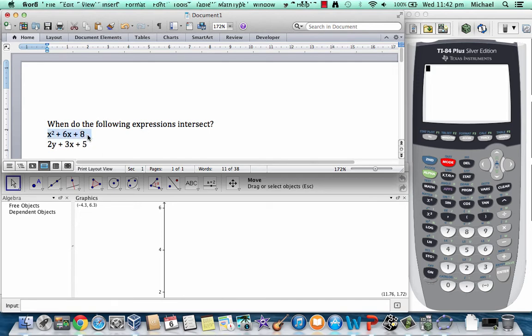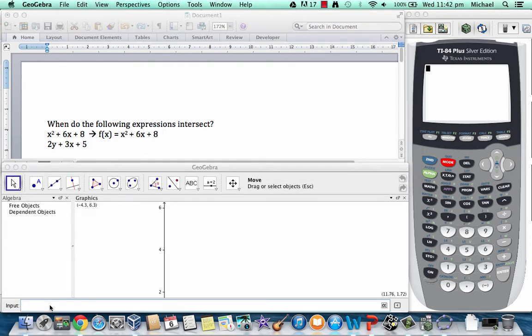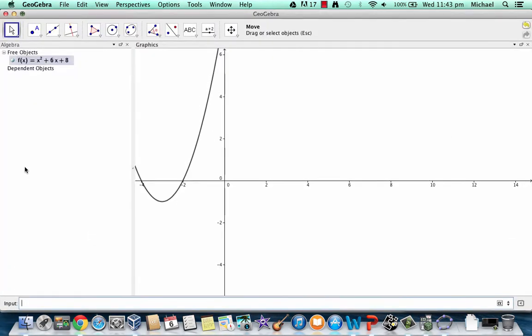So this one we're just going to rewrite this in function form by saying f(x) is equal to what we have over here. Now what we can do is in GeoGebra we can type this expression in. So you write f(x) is equal to x. Now in order to do this in GeoGebra you're going to have to use the shift and the 6 key to give you this symbol that will represent raised to the exponent of 2 plus 6x plus 8. Once you type that in and you press enter it's going to graph that line for you which you can see here.